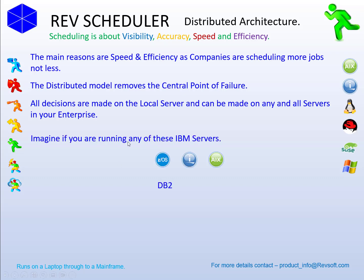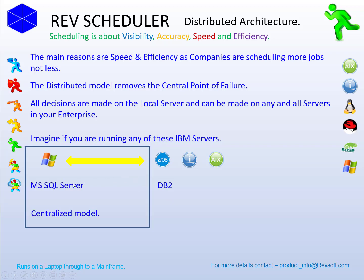Imagine you're running IBM ZOS, IBM AIX with DB2, and you go for a centralized model running on a Windows MS SQL Server. We've got the skateboard here trying to tow the Rolls-Royce, Lamborghini, and the Ferrari. How many decisions could be made locally rather than sending them to a remote central server? It has to be faster locally — it is not a theory, it is practical. The distributed model harnesses the power of your servers.